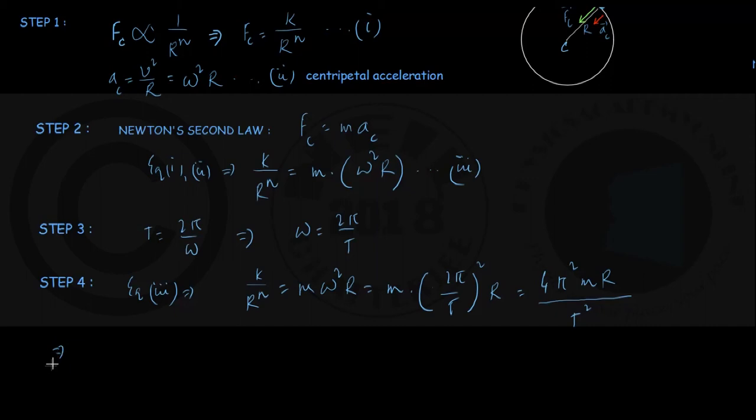A little rearrangement: we have k upon r to the power n is equal to 4π squared mr by t squared, and therefore we can write t squared is equal to 4π squared into m divided by k into r to the power n plus 1. Just verify my steps.